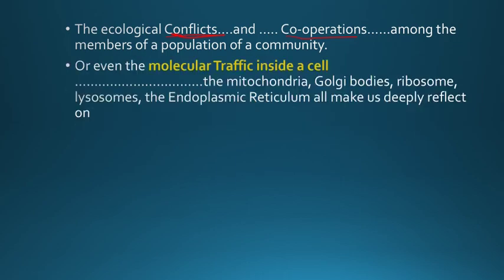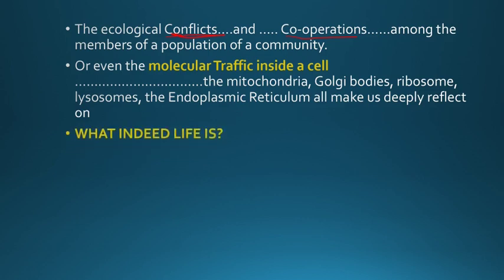Even the molecular traffic inside a cell is remarkable. Inside the cell there is cytoplasm consisting of mitochondria, Golgi complex, ribosomes, lysosomes, endoplasmic reticulum, and in plant cells, chloroplast. All these different organelles are working, carrying out their own functions, and coordinating with each other. This makes us deeply reflect on how they are working together, how they might have formed, and how there is coordination among them.